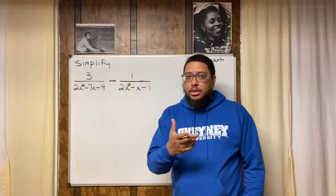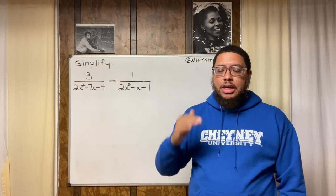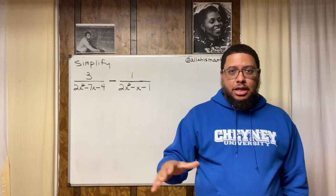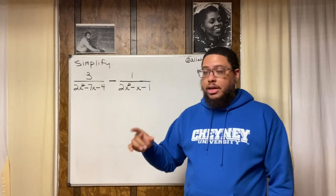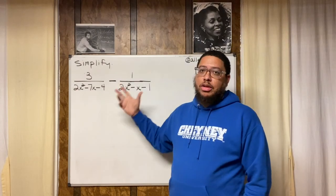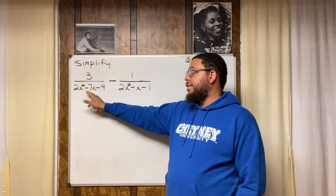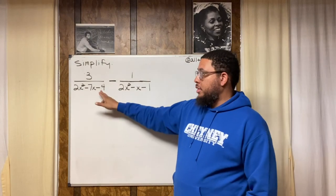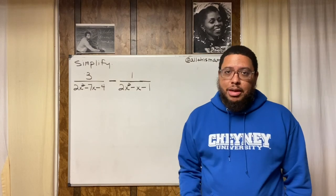One thing you got to know is that you can't add or subtract fractions unless the denominators are equivalent — the denominators got to be exactly the same. If they're not exactly the same, you cannot add or subtract. This is a subtraction problem, so we can't do anything in this format, because even though this is a 2x squared and that's a 2x squared, this is a negative 7x and this is a negative x — they are not the same thing. This is a negative 4 and this is a negative 1 — they are not the same thing.